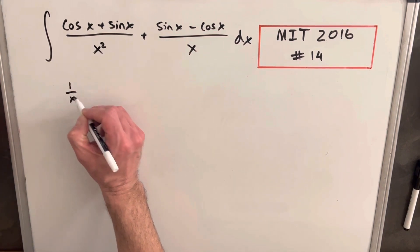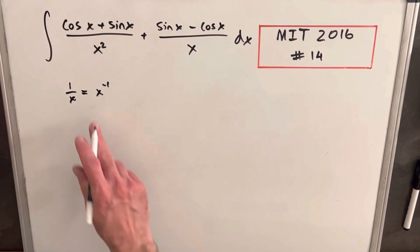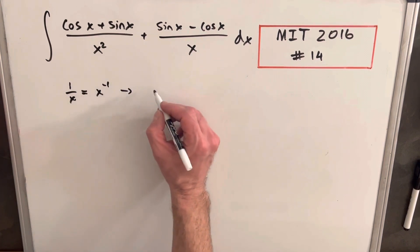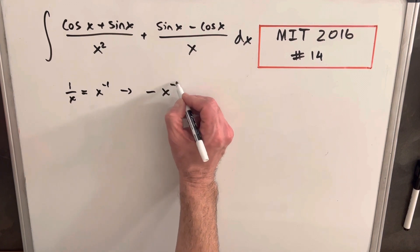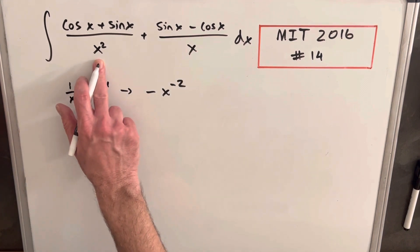This is like 1 over x, which is x to the minus 1. If I take the derivative of that, I get minus x to the minus 2, very similar to what we have over here.